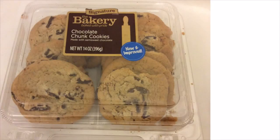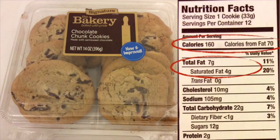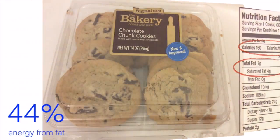When you look at these cookies, you'd probably identify them primarily as a source of carbohydrates. But actually, each of these cookies, weighing 33 grams, provides 7 grams of fat. So more than 21% of these cookies is fat, and almost half of their calories come from fat.